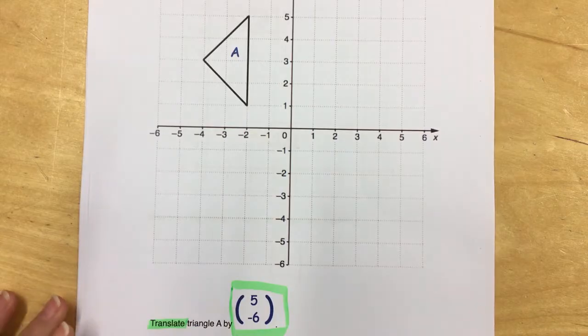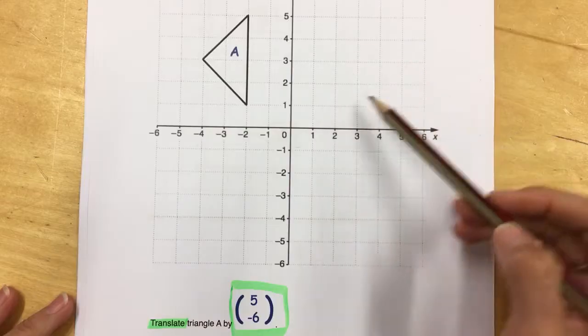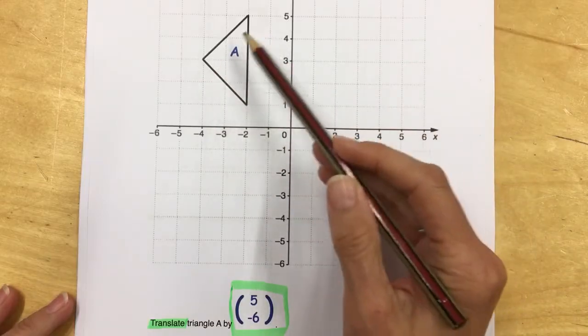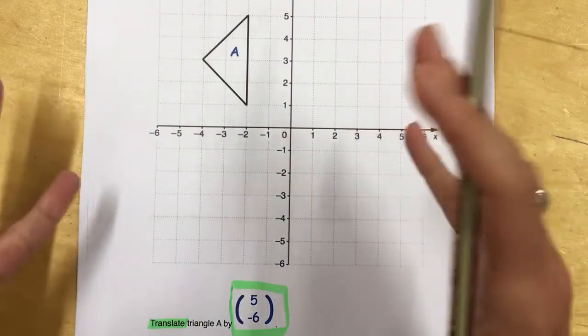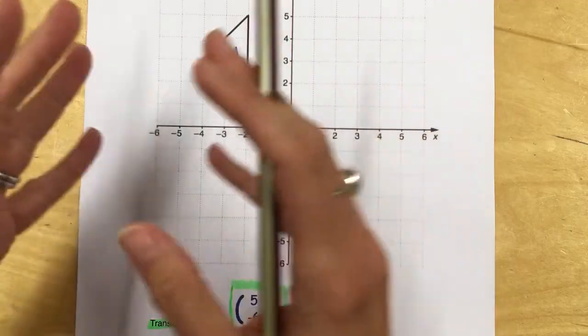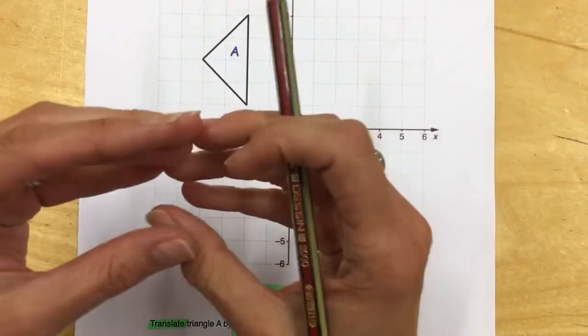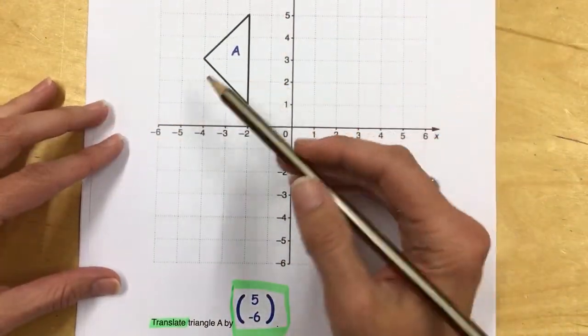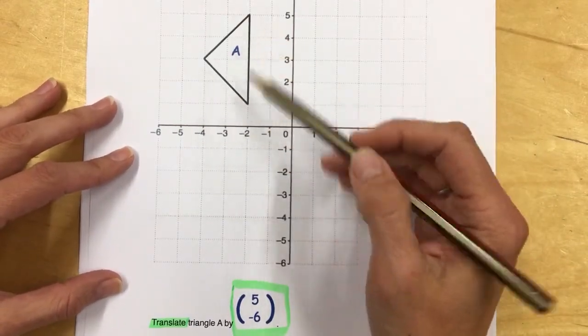Translation means moving the shape in a direction, but the shape stays exactly the same size and orientation. It's not going to rotate, enlarge, or get smaller—it stays exactly the same size and remains congruent to the original shape.